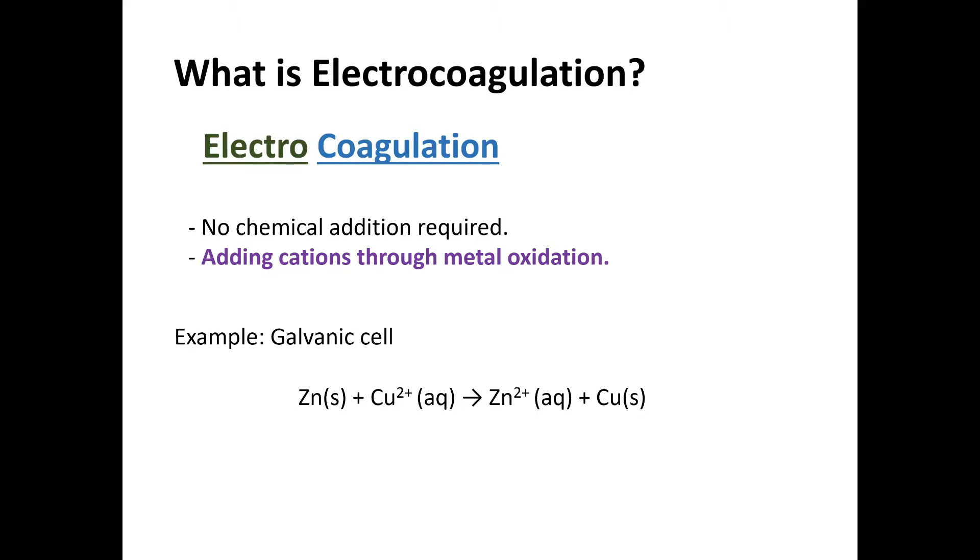You might have learned galvanic cells in the chemistry class. In galvanic cells, the zinc electrode is oxidized as an anode, thus zinc ions are dissolved into the solution. Same way, you can oxidize aluminum or iron electrode to add multi-valent cations for coagulation.